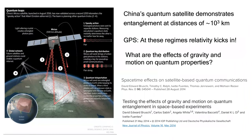For example, there are experiments using satellites that distribute entanglement at thousands of kilometers. At those scales, relativity kicks in because the proper time on Earth is different from the proper time on satellites. An interesting question is: what are the effects of gravity on quantum properties such as entanglement or superposition? This is a line of research I'm interested in, and I have a series of articles in that direction.